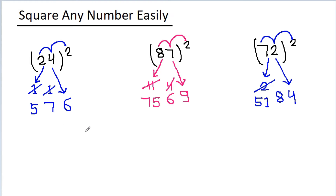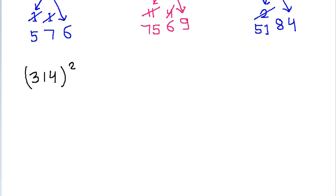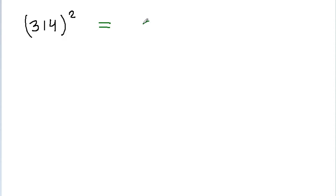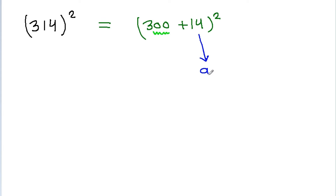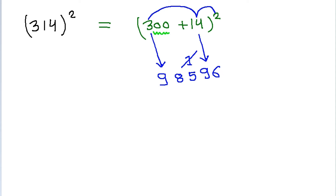And if we have to square any 3-digit number, for example 314, then it is equal to 300 plus 14, squared. And 14 squared is 196, and we have 2 zeros here. So we write 9 and 6, and 1 will get carried. And 3 times 14 is 42, times 2 is 84, and 84 plus 1 is 85. So we write 8 and 5.